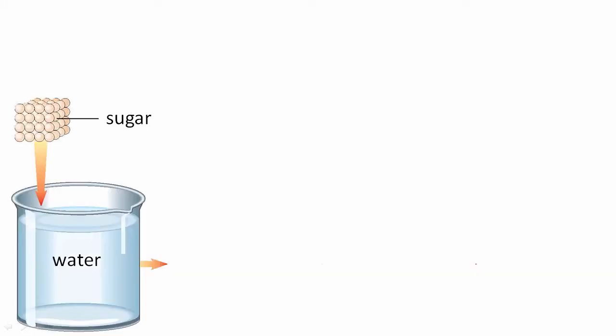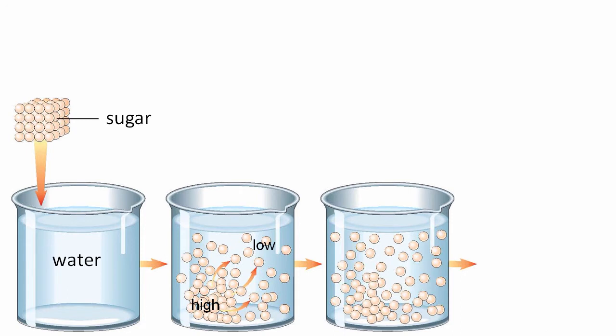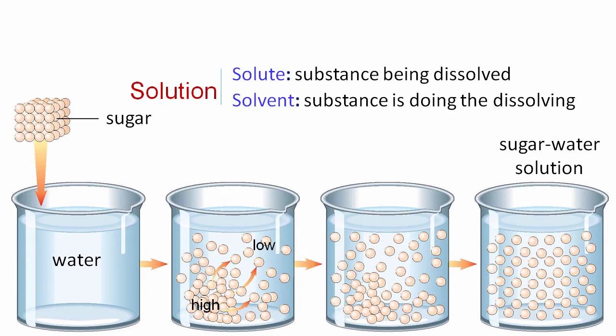Okay, so consider a sugar cube that's dropped into a beaker of water. The water dissolves the sugar cube into smaller particles that collide with one another and spread out until there is an even distribution of sugar within the water. This mixture is called a solution, and it's made of just two components. The substance that's being dissolved is known as the solute, whereas the solvent is the substance that's doing the dissolving.